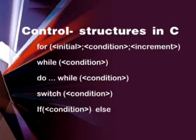In the while and do, the substatement is executed repeatedly so long as the value of the expression remains non-zero or true. With while, the test including all side effects from the expression occurs before each execution of the statement. With do, the test follows each iteration.